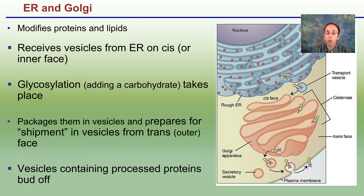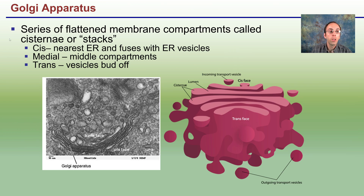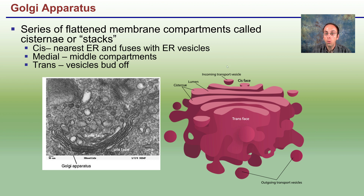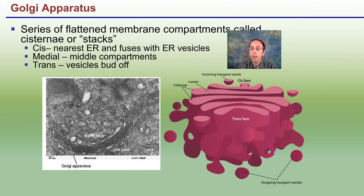Vesicles containing processed proteins bud off and in this example are attached to the exterior of the cell on the plasma membrane. The Golgi apparatus is a series of flattened membrane components called cisternae, or sacs. The cis face is near the ER and fuses with ER vesicles — ER referring to endoplasmic reticulum. The medial is the middle, and the trans is where vesicles bud off and exit.